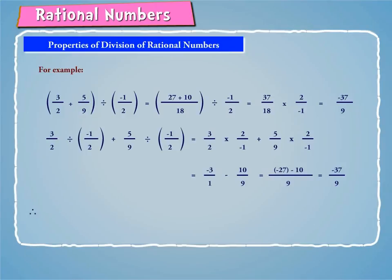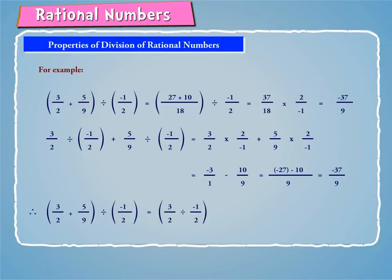Therefore, we found that 3 by 2 plus 5 by 9 divided by minus 1 by 2 is equal to 3 by 2 divided by minus 1 by 2 plus 5 by 9 divided by minus 1 by 2, confirming the distributive property.